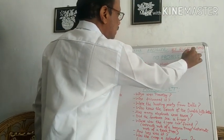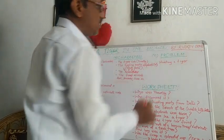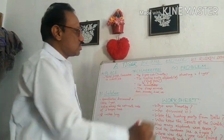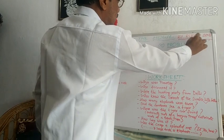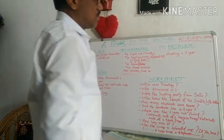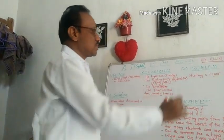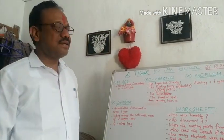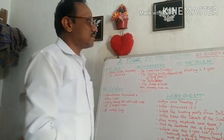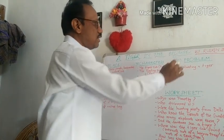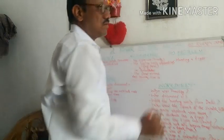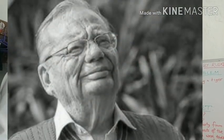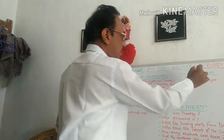Who is the story written by? Ruskin Bond. He belonged to Mussoorie, which is in Dehradun, and the state is Uttarakhand. He is a renowned writer and has also been awarded three different awards.